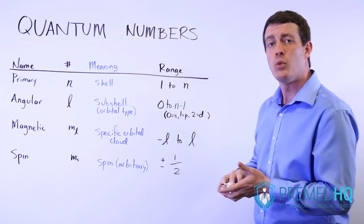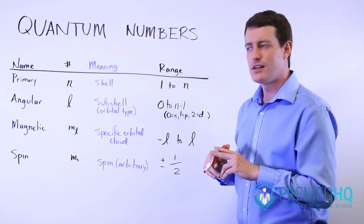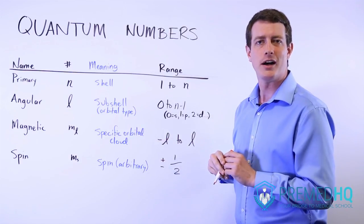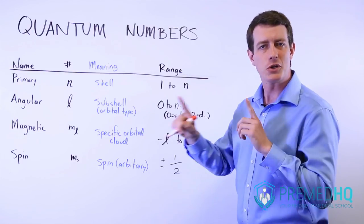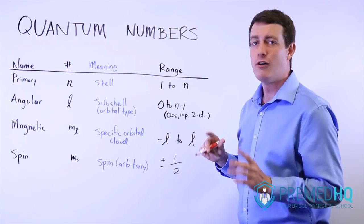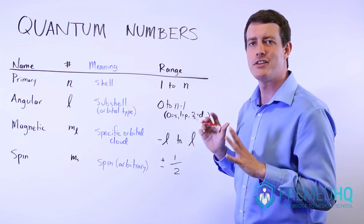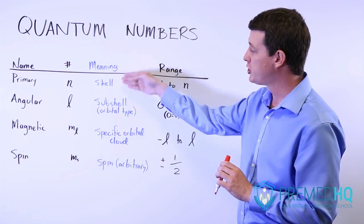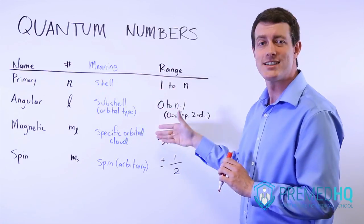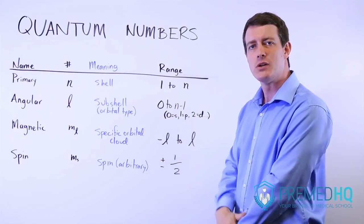Finally, we know that there are two electrons that can fit into any one orbital cloud. And we need a way of describing them to distinguish those two electrons from each other. Remember that no two electrons can have the exact same quantum numbers. But if they're in the same shell, subshell, and cloud, then we need a way of distinguishing those two.